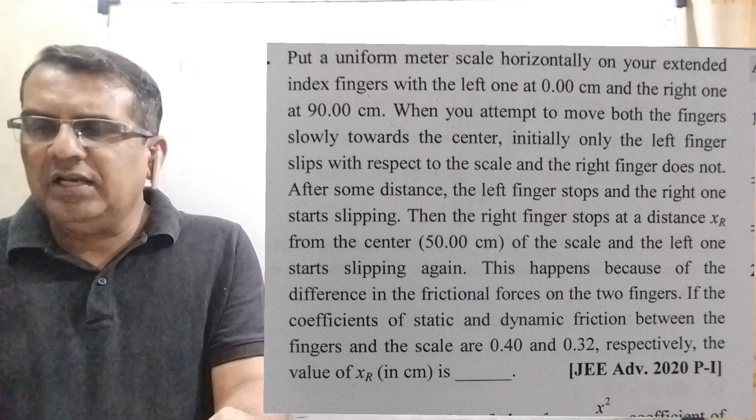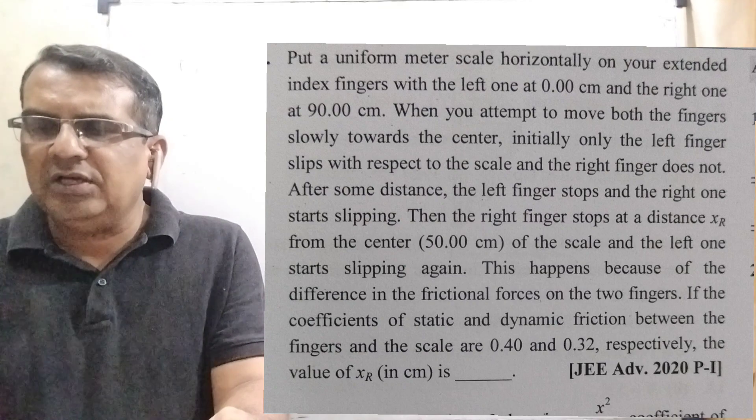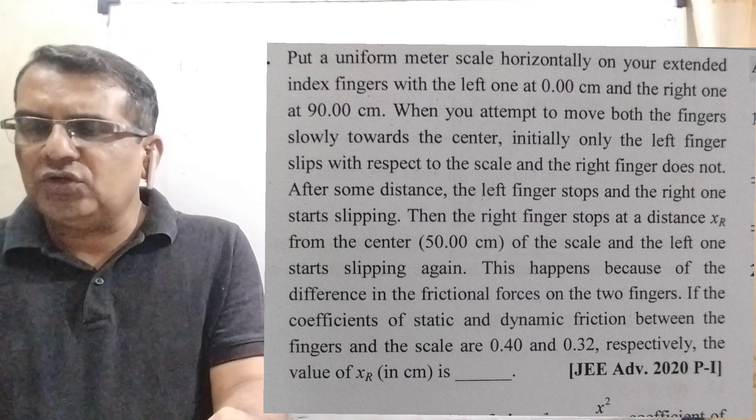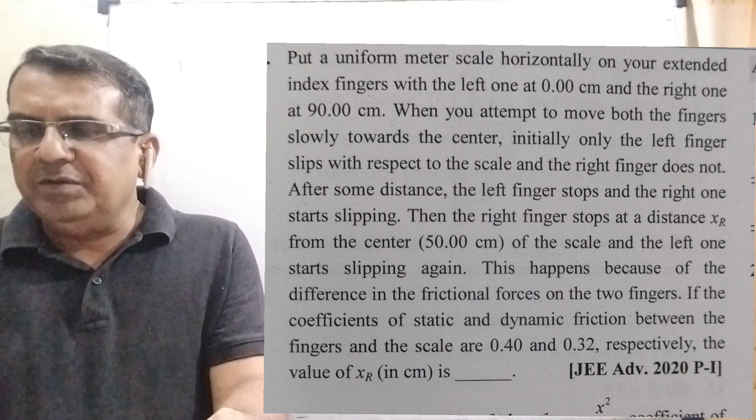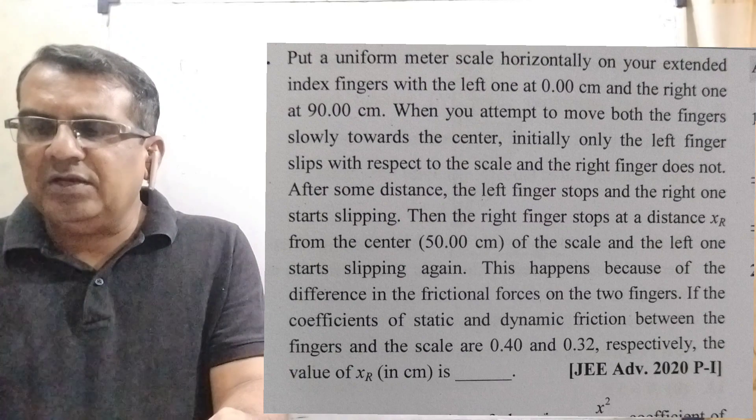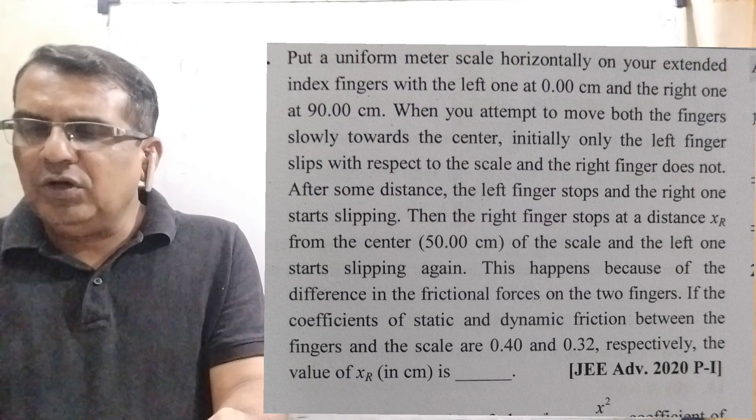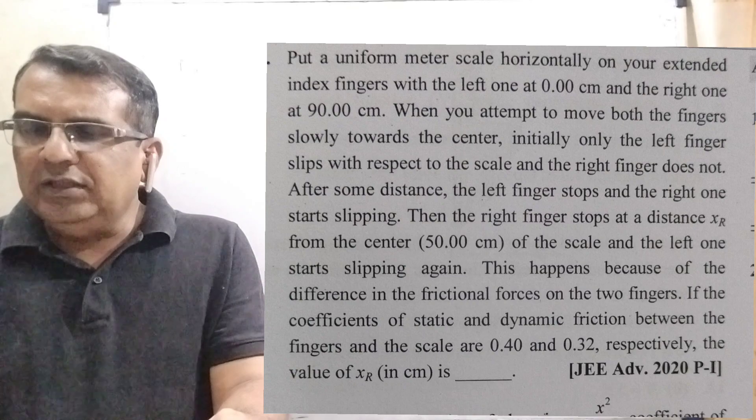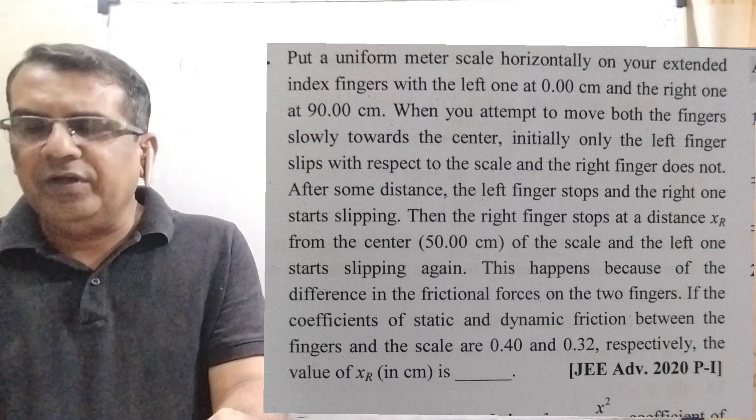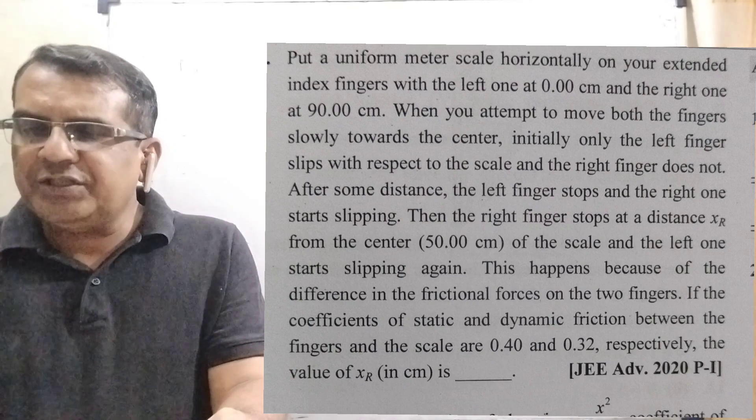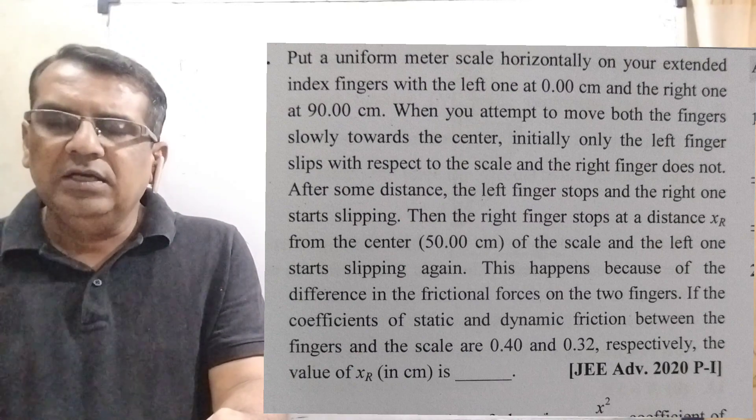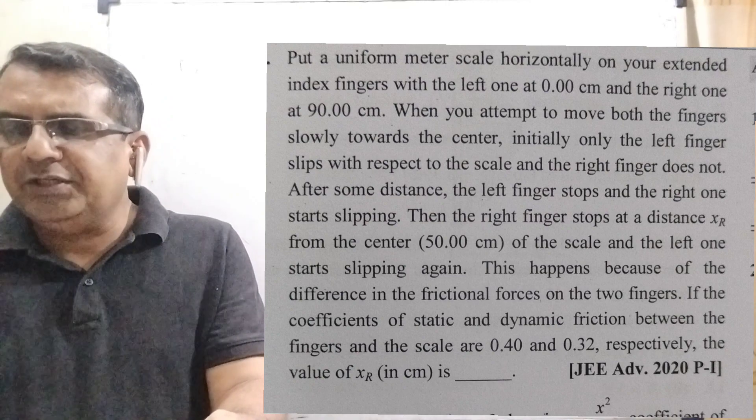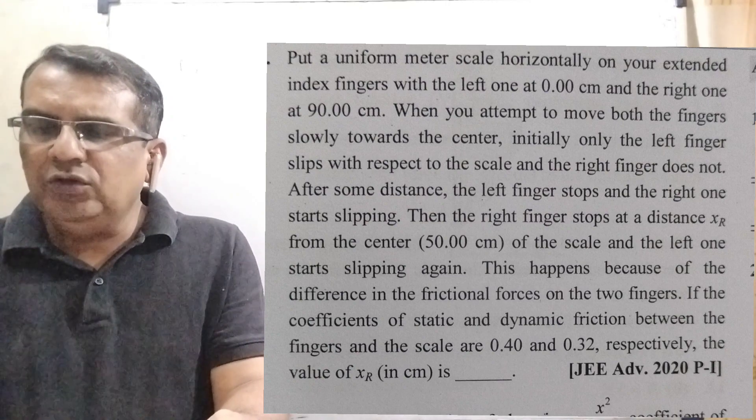After some distance, the left finger stops and the right one starts slipping. Then the right finger stops at a distance XR from the center (50 centimeter) of the scale and the left one starts slipping again. This happens because of the difference in the frictional forces on the two fingers. If the coefficient of static and dynamic friction between the fingers and the scale are 0.40 and 0.32 respectively, the value of XR is?